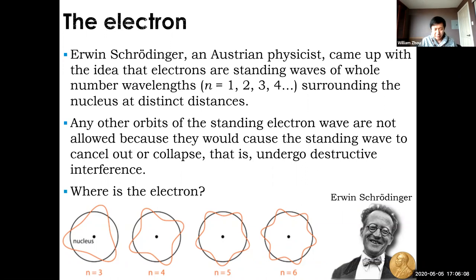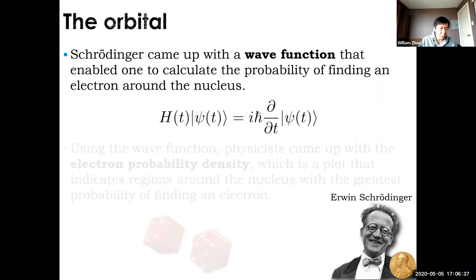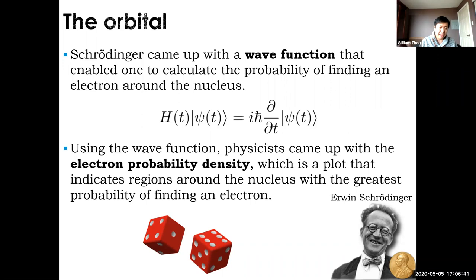You have a whole wave, but where is the electron exactly? That question is difficult to answer because electrons are not particles — you can't just pinpoint and say it's right there. Schrödinger came up with a wave function. You don't have to use this equation or understand what it means. This wave function describes the probability of finding an electron around the nucleus. The keyword is probability — we don't know for certain where the electron is, but we can have an idea.